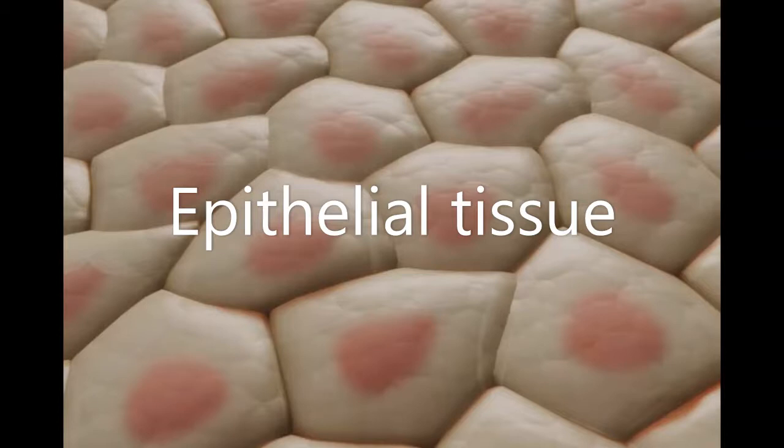This thin, tough covering protects your body and its organs. Epithelial tissue is also found inside your body. It forms barriers to protect the inside of your nose, mouth, throat, and stomach.